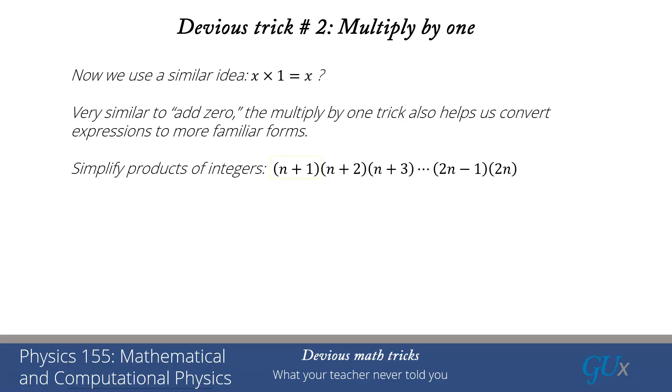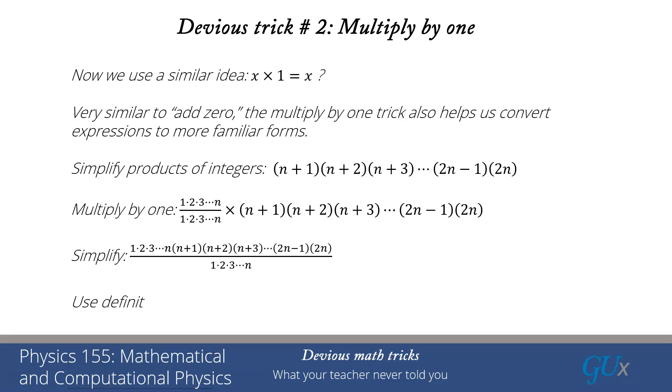Let's look at a product of integers, (n+1)(n+2)(n+3) all the way out to 2n. That gets cumbersome to write down in an abstract way. But if I just multiply by 1, I'm going to choose 1 to be 1×2×3 out to n divided by 1×2×3 out to n. If I regroup the numerator, I've got two factorials. I've got a factorial in the numerator because it's the product of all integers from 1 to 2n and a factorial in the denominator. Just by using the definition of the factorial, we can write that much more compactly as 2n! divided by n!.